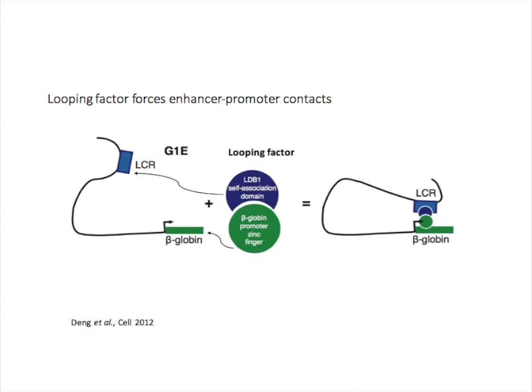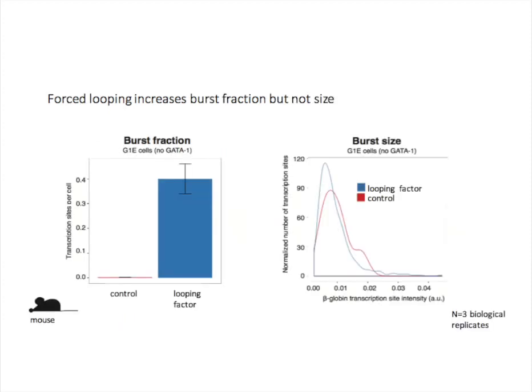Next, we specifically created a contact between the globin enhancer and promoter. A previous graduate student in the lab, Wulan Deng, showed that if we express a protein that forces a loop between the globin enhancer and promoter, we can activate transcription of globin. We force this loop by expressing a protein that binds at the globin promoter and dimerizes with a protein present at the enhancer. Strikingly, this approach strongly increased burst fraction, but did not change burst size.